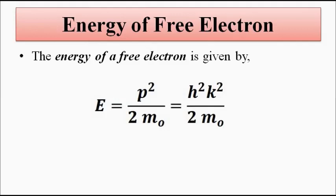Here m₀ is the free electron mass, ℏ is Planck's constant, and k is the wave vector associated with the electron. Now the problem with this equation is that m₀ — the free electron mass — is not the actual mass of the electron in a semiconductor, because once an electron overcomes the nuclear force of attraction and gets detached, it is not isolated. It is under interaction with a lot of free electrons and the ionic lattices in the semiconductor crystal.